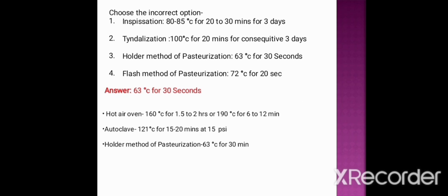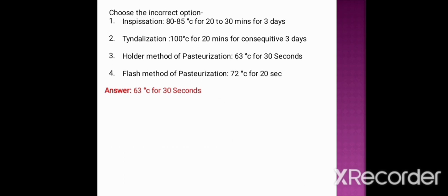Hot air oven sterilization is done at 160 degrees centigrade for 1.5 to 2 hours, or at 190 degrees centigrade for 60 minutes.